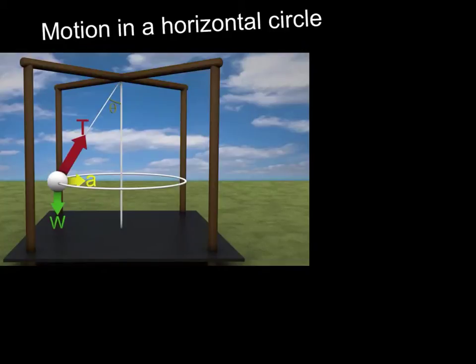I just stopped it in this position so that we can talk about some of the misconceptions. Firstly, this tension and this weight are the only forces acting on this object. Lots of people put a third force pointing towards the centre here, but it is really coming from the other two forces. So when you're asked to draw a free body diagram, you only draw the forces that are actually on the object.